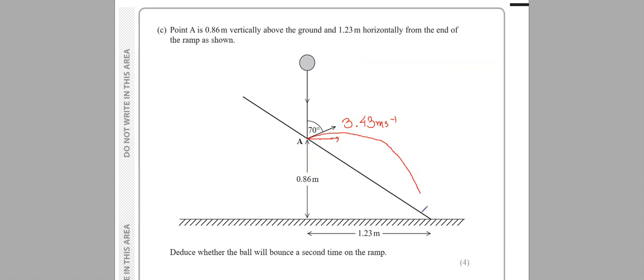The question asks if the ball will hit the ramp. For projectile motion, we separate vertical and horizontal components. Let's go to the vertical direction.